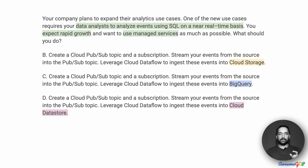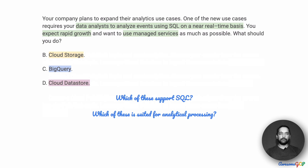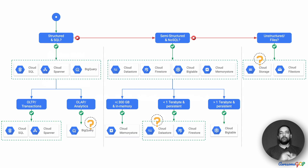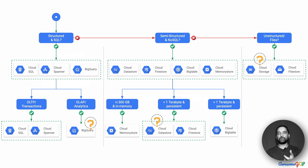Among Cloud Storage, BigQuery, and Cloud Datastore, which of these support SQL and which are suited for analytical processing? All the other parts of the requirements are consistent among options B, C, and D, except for where the data ends up. Looking at the flowchart that allows us to choose the right storage option, let's examine each. Cloud Storage is for unstructured files — blobs, objects. You can store any kind of data on it.